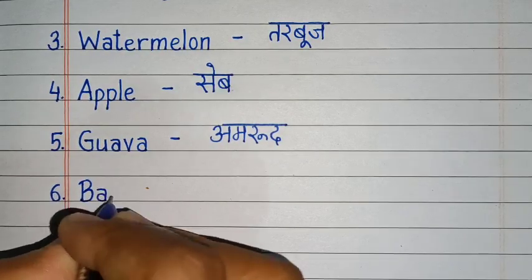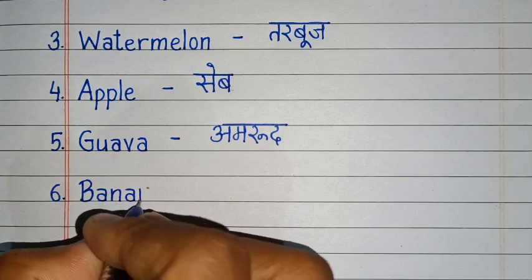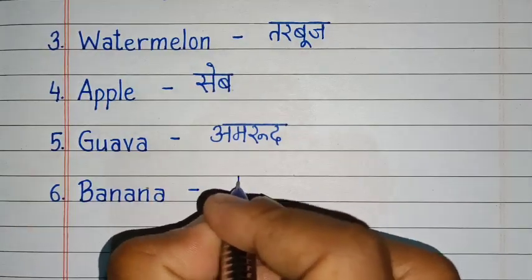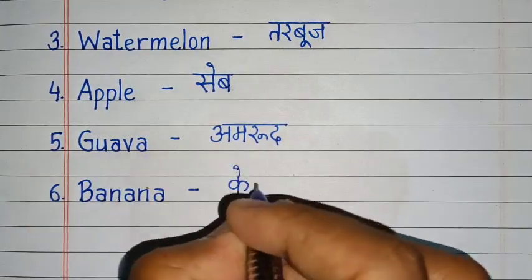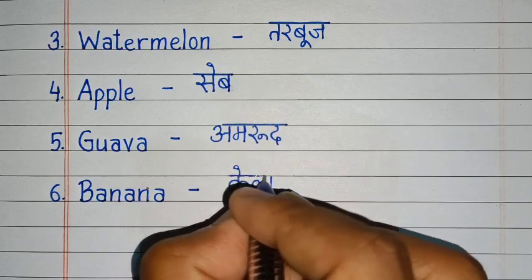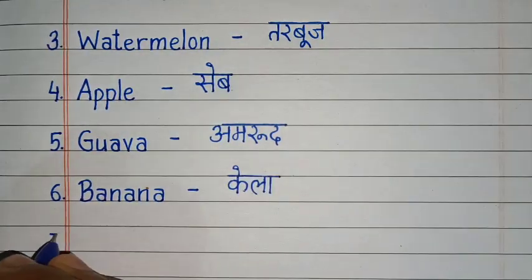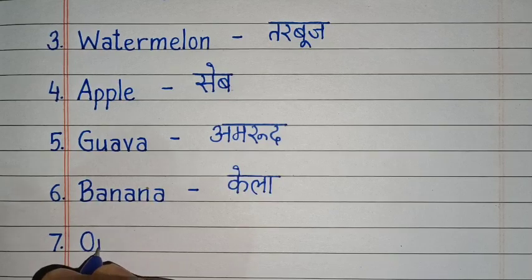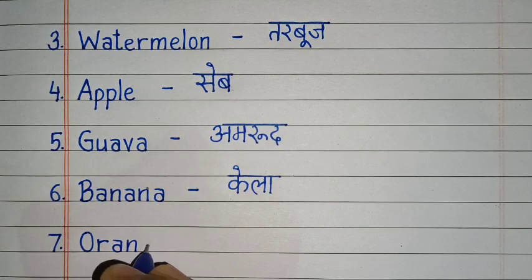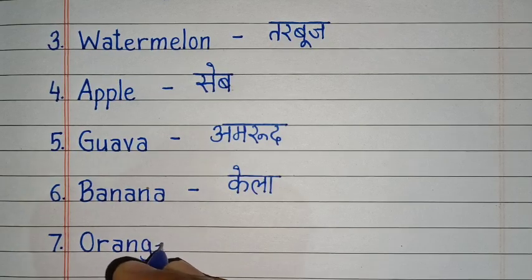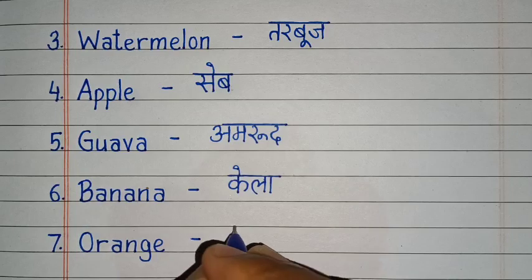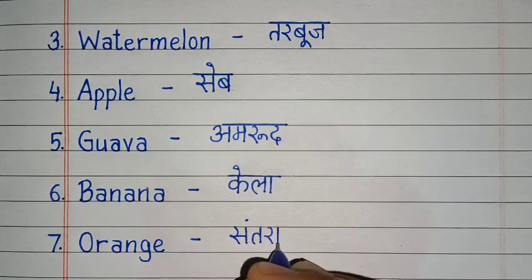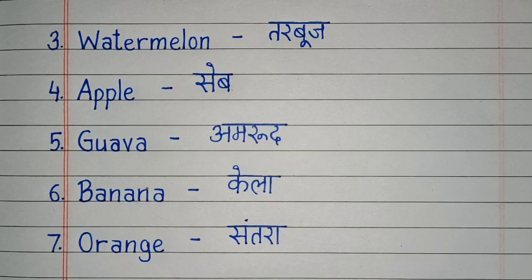B, A, N, A, N, A. Banana. Banana means kela. O, R, A, N, G, E. Orange. Orange means santara.